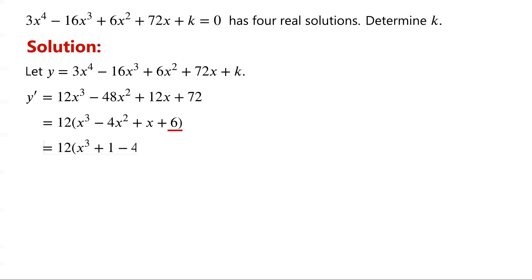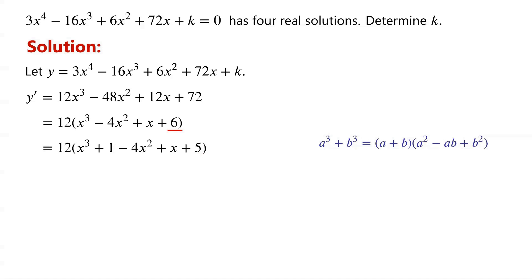We rewrite 6 as 1 plus 5, because x cubed plus 1 has x plus 1 as a factor. We know that a cubed plus b cubed equals (a plus b)(a squared minus ab plus b squared). By applying this, x cubed plus 1 can be written as (x plus 1)(x squared minus x plus 1).